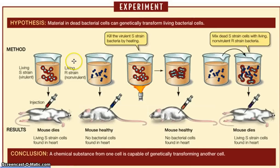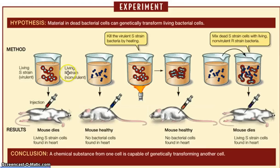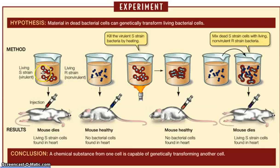Frederick Griffith was working with pneumonia, or rather the bacteria that causes pneumonia. In his work, he was trying to figure out ways to cure pneumonia and stop it from spreading. He found that there were two strains of this same bacteria that caused pneumonia.